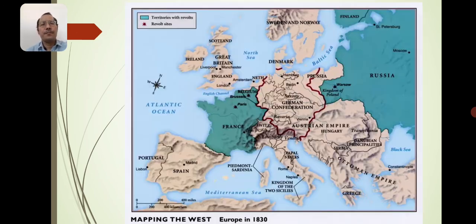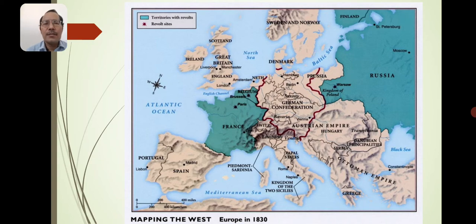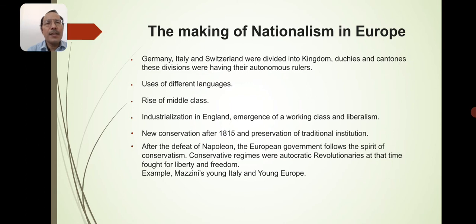In the very early part, the size of Russia, the German Confederation, revolt sites where revolts happened, and Spain — you can also see Portugal, Great Britain, Ireland, Scotland, Austria and Hungary, and the Ottoman Empire. Later on we see the map of 1830 of Europe. The making of nationalities: Germany, Italy, and Switzerland were divided into kingdoms, duchies, and cantons. These divisions had their autonomous rulers and different languages used within the same country. Germany earlier was known as Prussia.